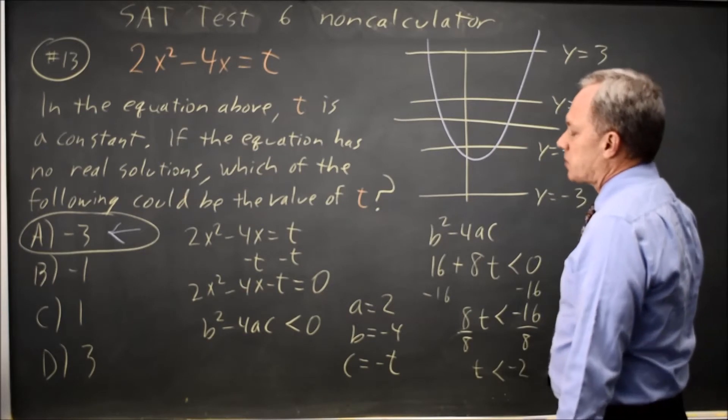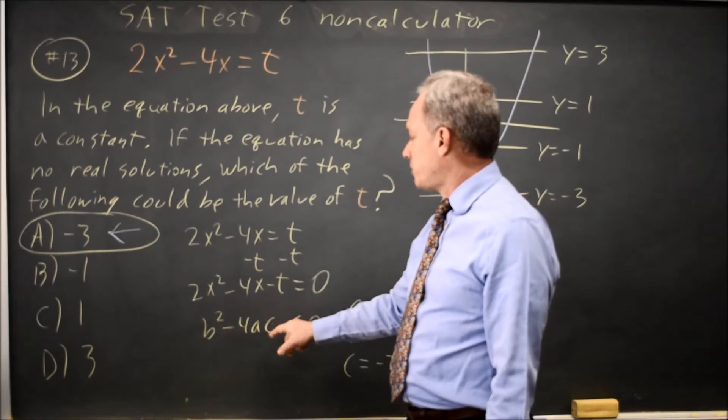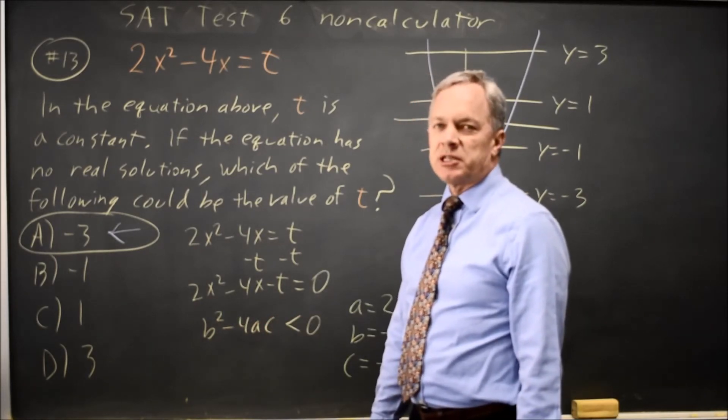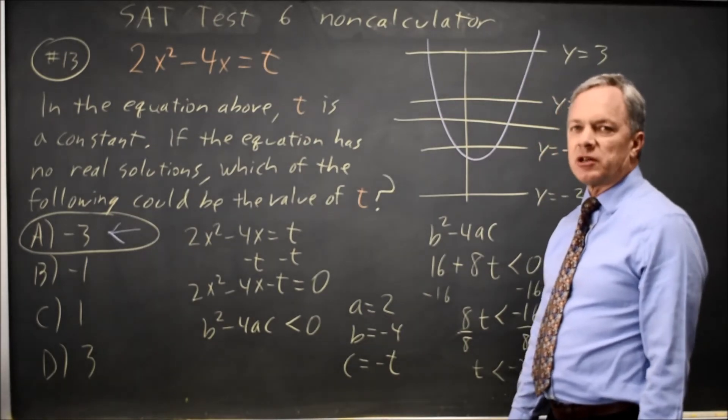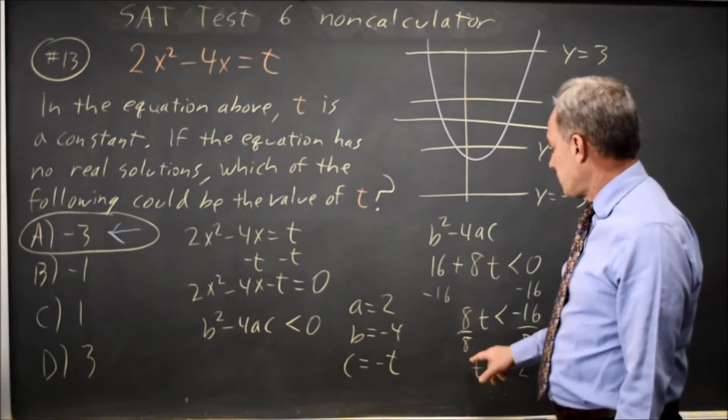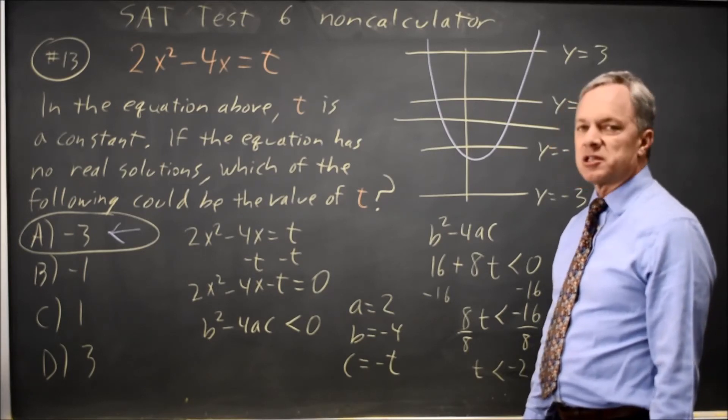A third option would be to use the quadratic formula, and that would have no solutions because when I took this square root of b squared minus 4ac, I'd be taking the square root of a negative number. So quadratic formula is a little bit of extra writing, but at the end, I'm looking for b squared minus 4ac less than 0, and that gives me choice A again.